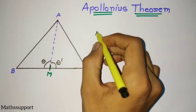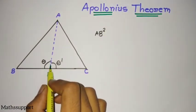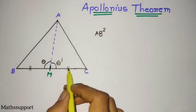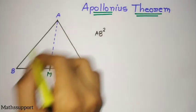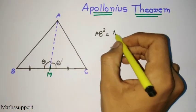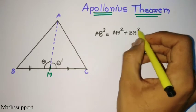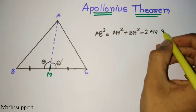Consider M is a midpoint, so AM is a median. BM equals MC, so everywhere in place of MC I will use BM. AB² equals AM² plus BM² minus 2AM·BM·cosθ. This is the cosine formula for this triangle.